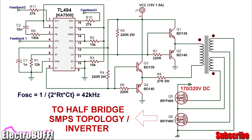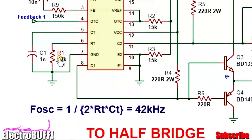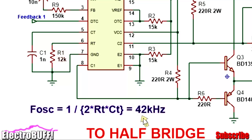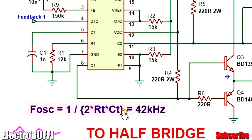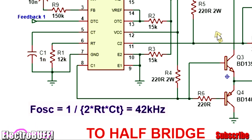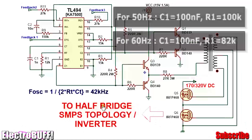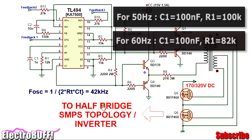The circuit is very simple and straightforward. The oscillator frequency is set to about 42 kHz — of course, it can be customized to any value. Capacitor C1 and resistor R1 are responsible for the frequency. The formula is given by 1 over 2 times RT times CT, with RT being R1 and CT being C1. We don't have an option at 12 kHz, so we get 42 kHz as shown. This is good for a high frequency switch mode power supply or a power inverter in which you need a current transformer. For 50 Hz, you need to change the values for C1 and R1 as shown.